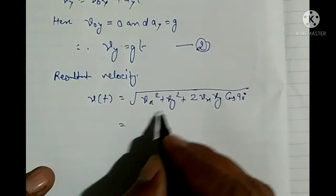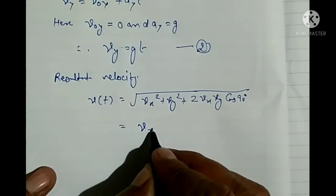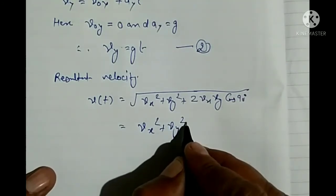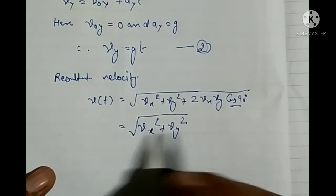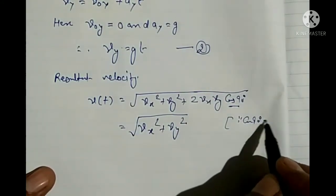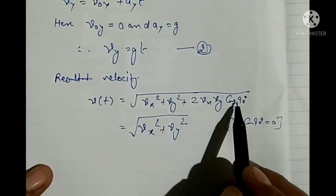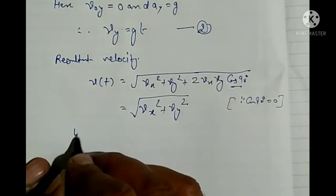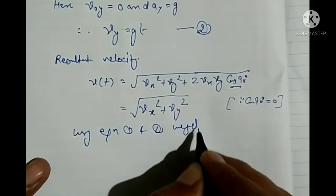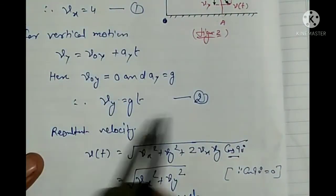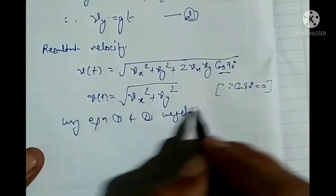Since cos90° = 0, the cross term vanishes. Using equations 1 and 2, we get: V(t) = √(u² + g²t²). This is equation number 3.